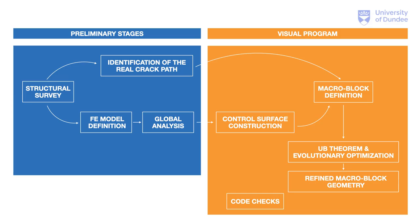The workflow is all integrated into a visual program, implemented in the environment offered by Rhino and Grasshopper, which allows parametric handling of a large set of information through object-oriented scripts. In the blue box, I am reporting the steps needed to assess the global behavior of the analyzed structure. Preliminary global analyses are able to provide relevant information on possible collapse mechanisms, especially for structures that are apparently in good state of conservation and do not show any crack patterns. In the orange box are represented the steps referred to local analyses, performed by combining concepts from both the upper bound theorem of plasticity and evolutionary solvers.